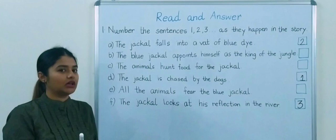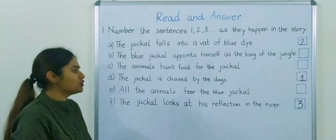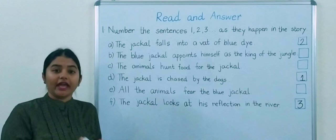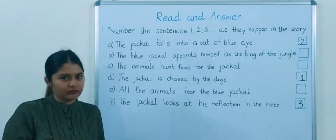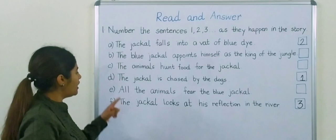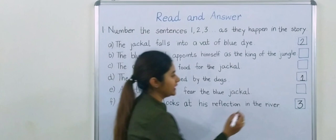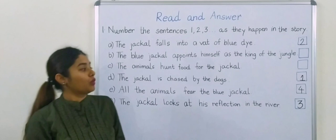Then what happened next? Next, he was at the river and there were also other animals there. So now, looking at him, now that he was of blue color, everyone started fearing him. Everyone started speaking about him. That, oh look at him, he looks so strange. So all the animals fear the blue jackal. We give fourth point to this sentence.